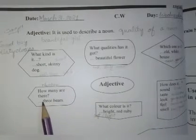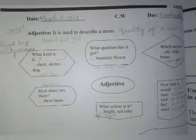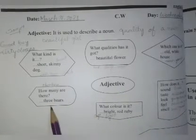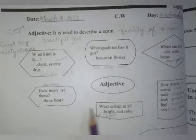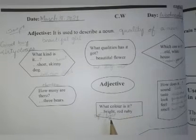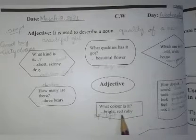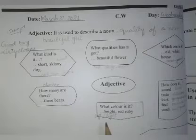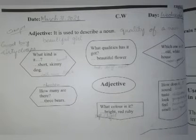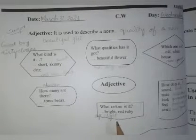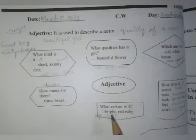Number is also a type of adjective — how many are there: one, two, three, four, five. Color is another type: what color is it? Bright — bright red ruby. Soft red, color soft, color light. These are all different kinds of adjectives — number adjectives and color adjectives.